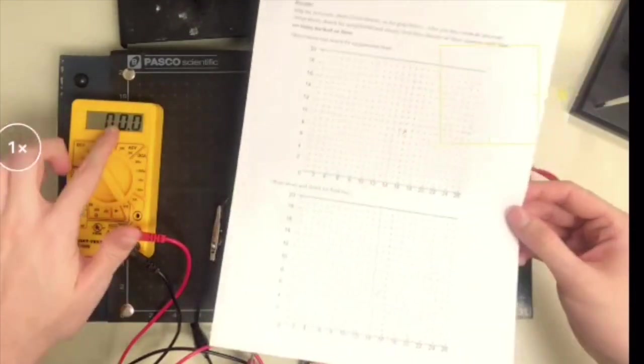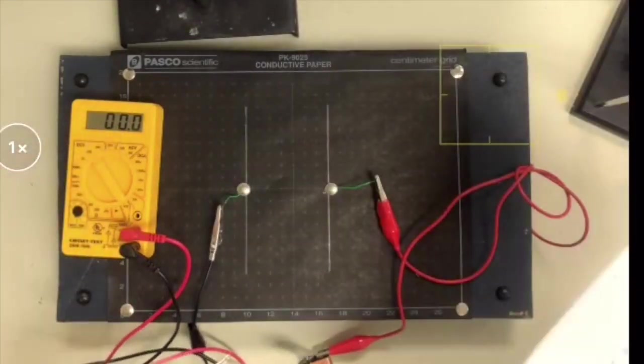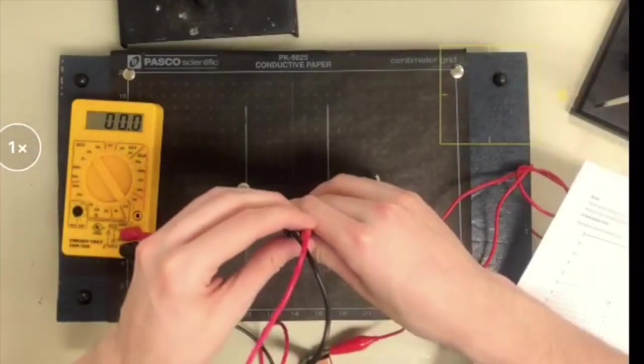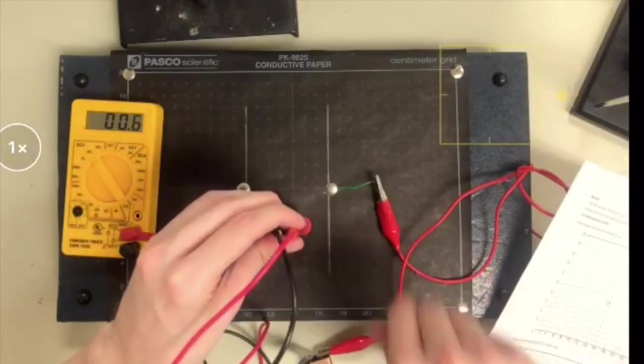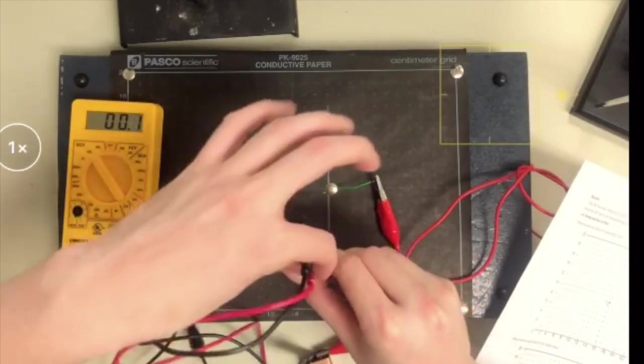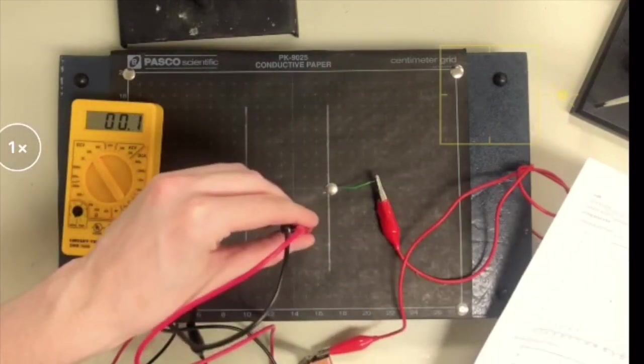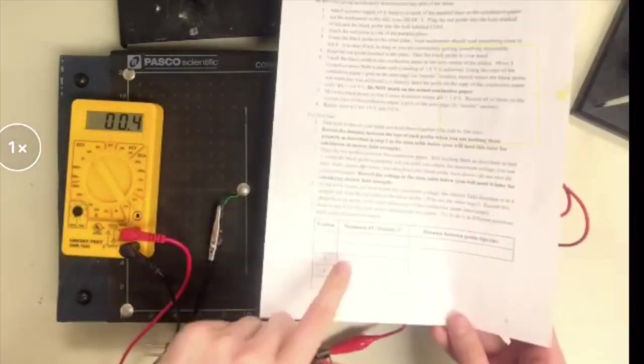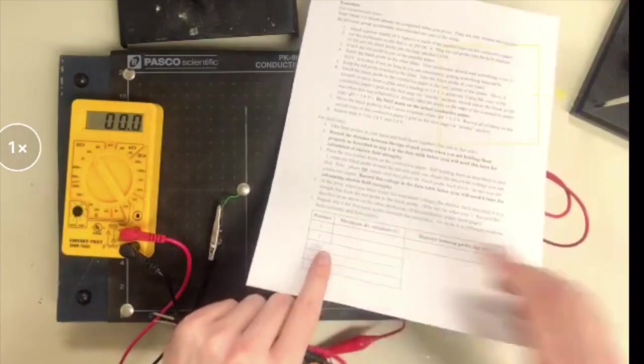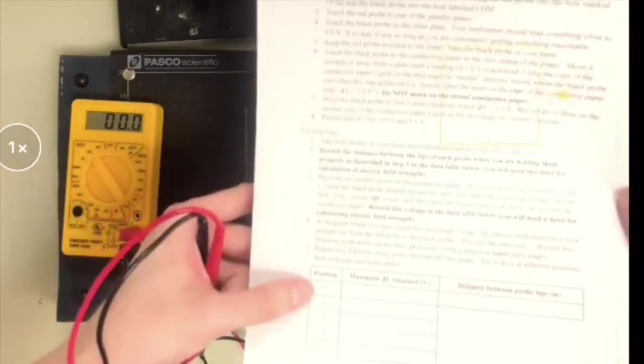And very important, you need to make sure you record that number as well. So when we got that maximum there, that 0.7 that we found, which was the highest on this rotation, so we got it to a 0.6, make sure you are recording that there on the table for the field lines portion of the lab. You need to make sure you're writing down the maximum voltage you obtained.